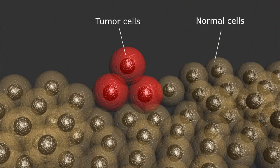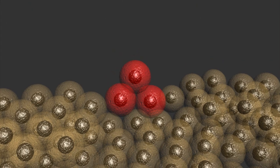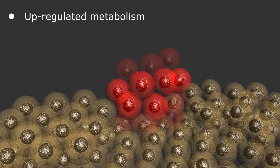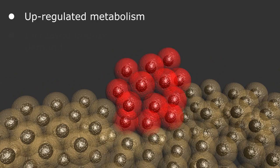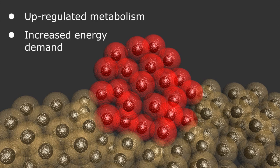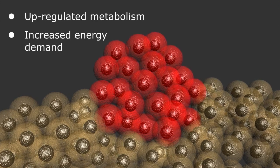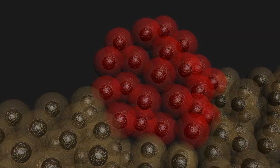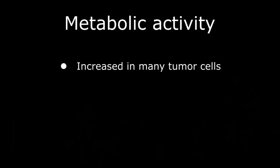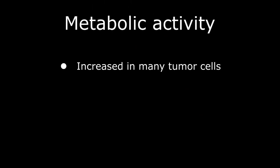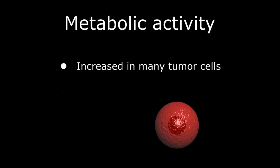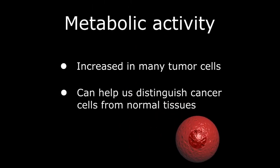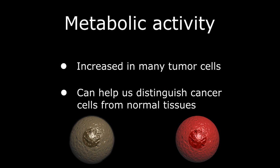To support this type of unregulated growth, the tumor cell's metabolism is upregulated, requiring a significant amount of energy when compared to the normal surrounding tissues. The increased metabolic activity of a lot of cancers is a key feature of tumor cells that can help us distinguish them from the normal surrounding tissues.